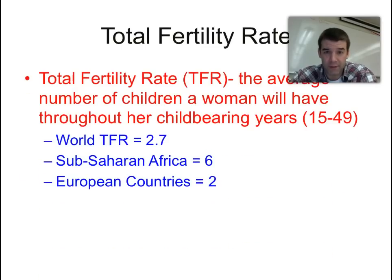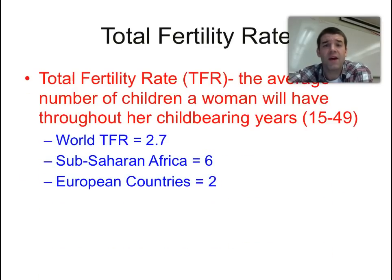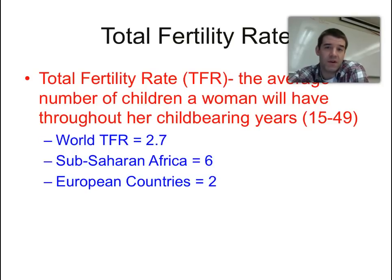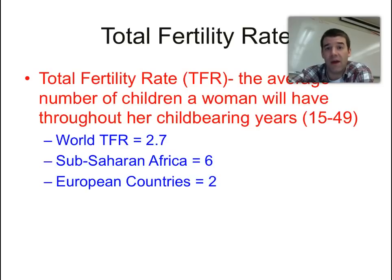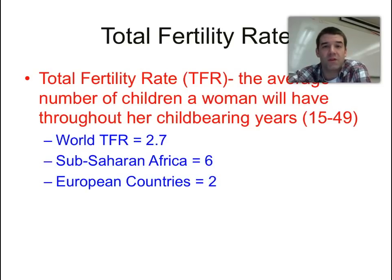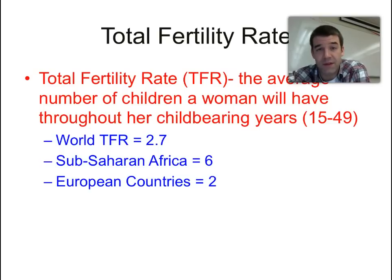Starting with total fertility rate — often just called the fertility rate — the TFR is the number of children a woman would have during her childbearing years. There are certain biological time periods when women are able to have children, and generally when we look at most cultural norms, that falls within the 15 to 49 age group.